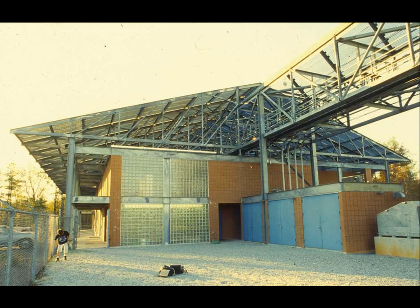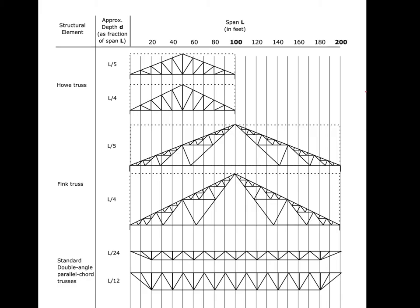Here's a Howe truss — in the previous diagram the diagonal elements went one way, but here they placed the diagonals on the long diagonal part of the quadrilateral. Basically this is a fundamental Howe truss with equally spaced verticals and diagonals that fill in to create stabilization.